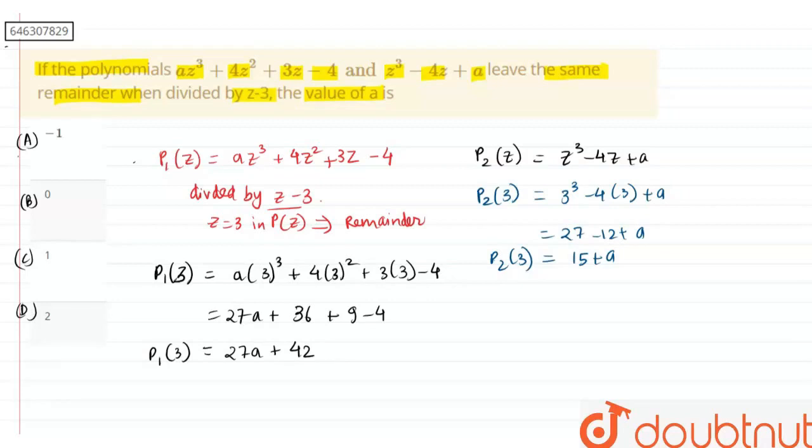Since in the question both remainders are equal, this gives us 27a + 42 = 15 + a. Shifting them from either side, we get 26a = 15 - 42 which turns out to be -26. And this will give us a = -1.